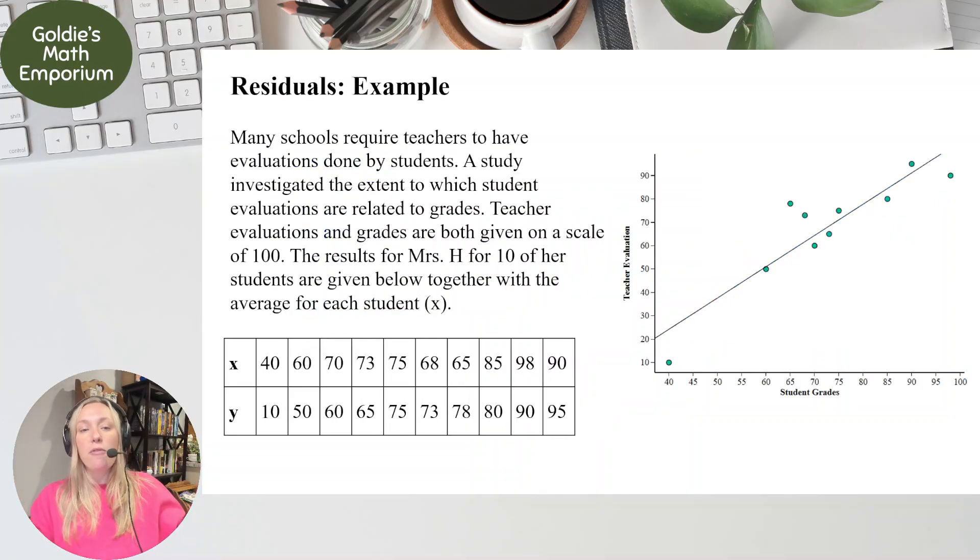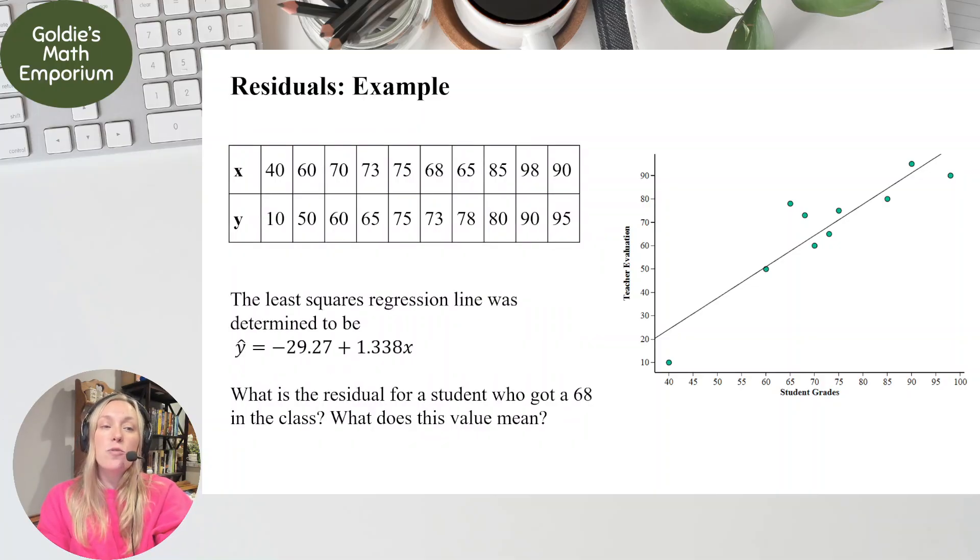Let's look at our example. We've gone through this example before. We actually made our least squares regression line by hand earlier to fit this data. So to remind you, x represented the student grade that they got in class, and y represented the grade they gave the teacher on their evaluation. So this is what it looks like, and we got the least squares regression line to be y hat equals negative 29.27 plus 1.338x. Now our question that we're going to answer, what is the residual for a student who got a 68 in the class, and what does this value mean?